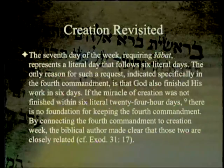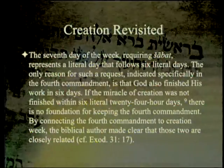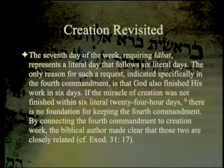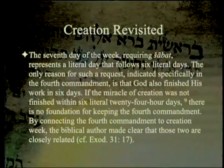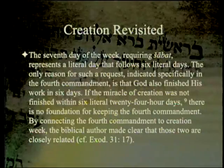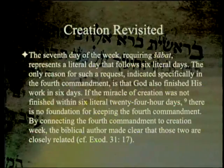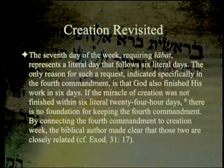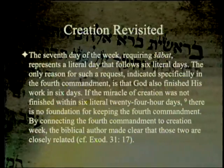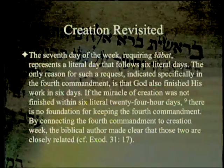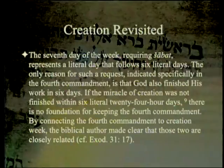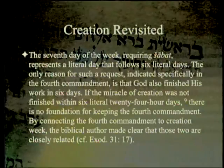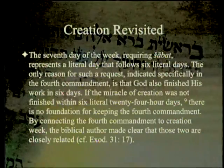The seventh day of the week, requiring 'shabbat,' represents a literal day that follows six literal days. The only reason for such a request, indicated specifically in the fourth commandment, is that God also finished his work in six days. If the miracle of creation was not finished within six literal 24-hour days, there is no foundation for the keeping of the fourth commandment. There is also a parenthetical reference, Exodus 31:17, which we will return to later.